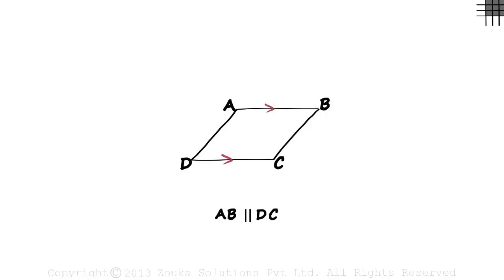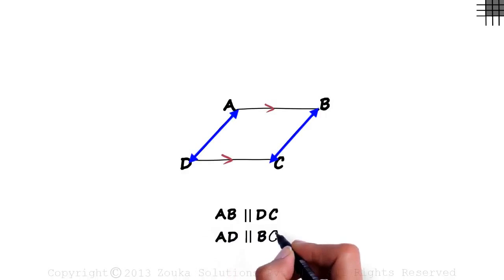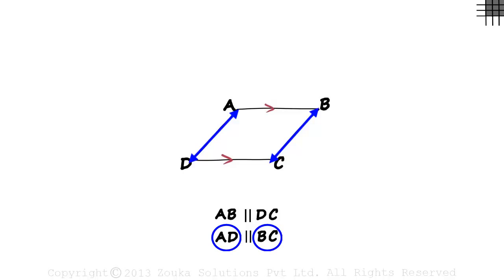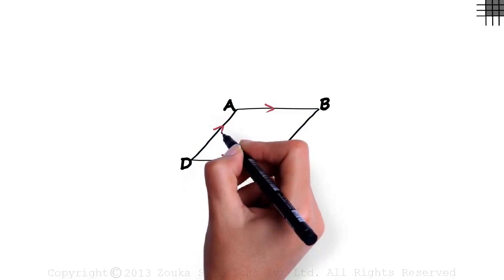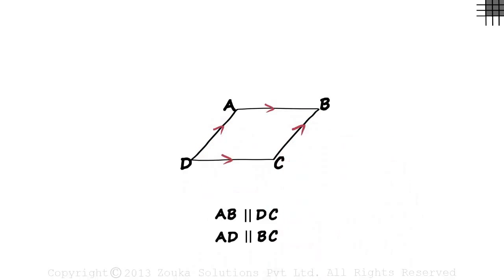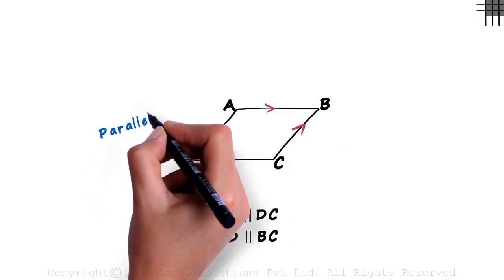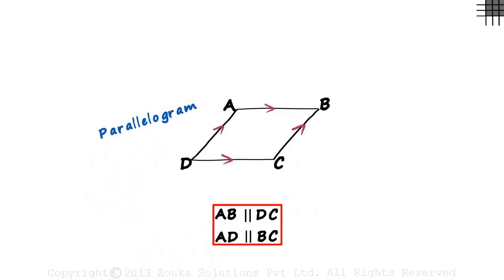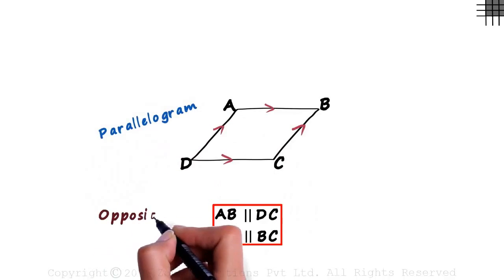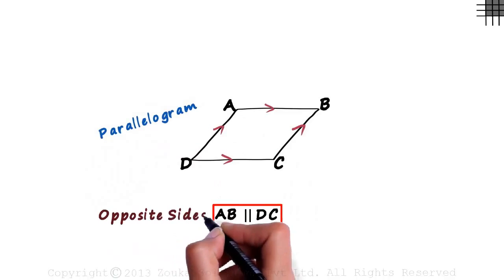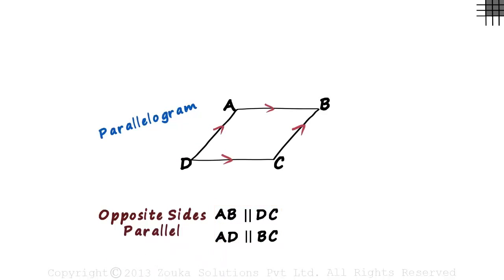The second pair of opposite sides is AD and BC. We can also see that AD is parallel to BC, so we draw arrows like this. Such quadrilaterals are called parallelograms — both pairs of opposite sides are parallel. This is the basic property of a parallelogram.